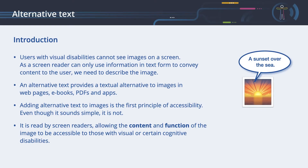Users with visual disabilities cannot see images on a screen. As a screen reader can only use information in text form to convey content to the user, we need to describe the image. An alternative text provides a textual alternative to images in webpages, ebooks, PDFs and apps. Adding alternative text to images is the first principle of accessibility.